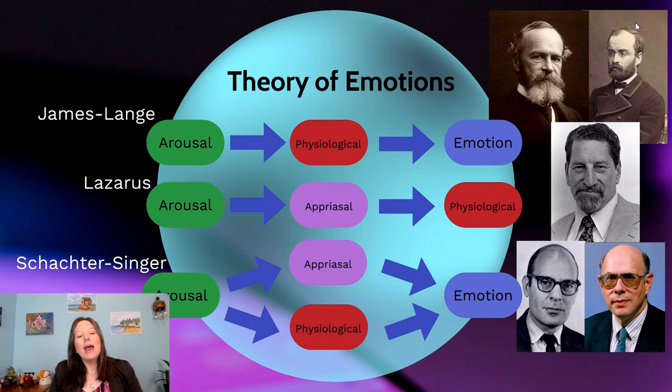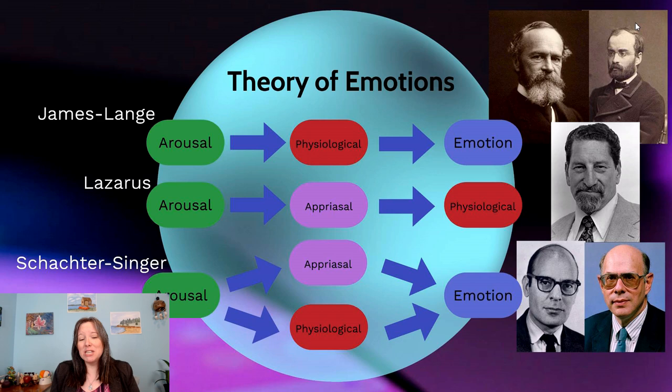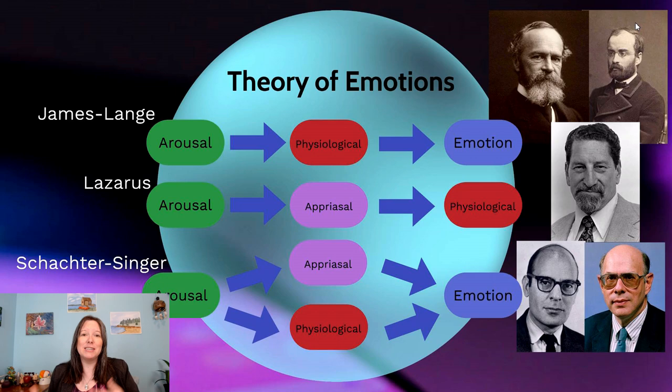I like the Schachter-Singer model the best because, unlike the James-Lange theory which argues that each specific emotion has a different physiological underpinning, the Schachter-Singer model allows us to say it's both the physiological response and the cognitive appraisal that determines the emotion. So sometimes your heart might be going fast because you're sexually aroused, or angry, or fearful, or excited about a birthday party. Your heart going fast might lead to different emotions depending on your cognitive appraisal of the situation.